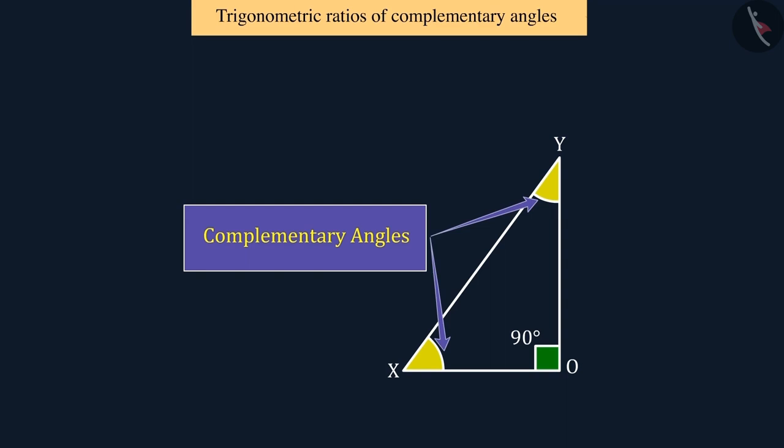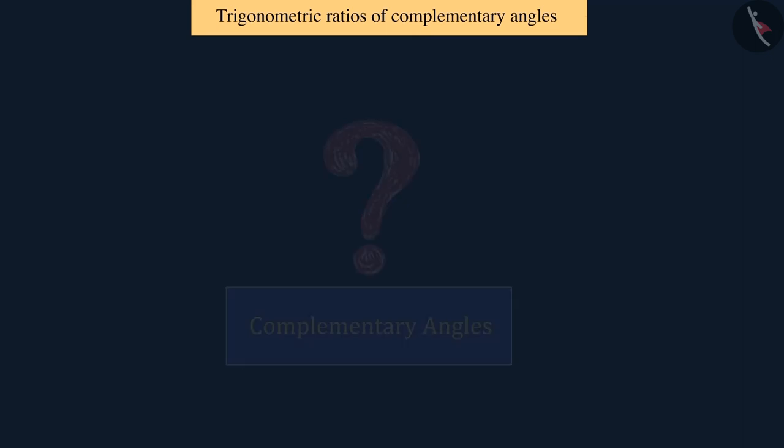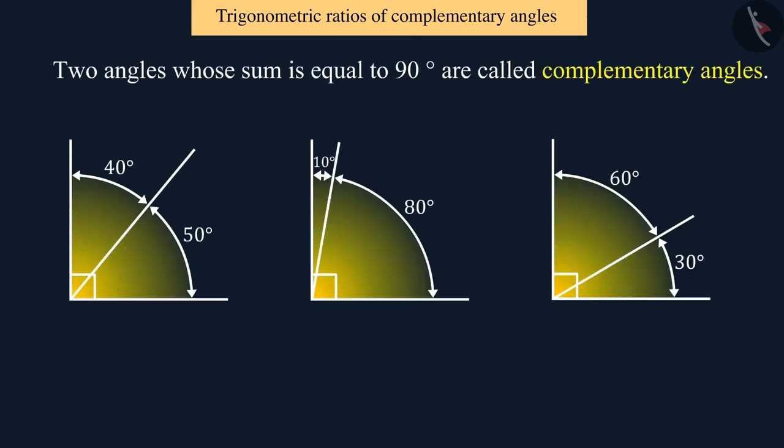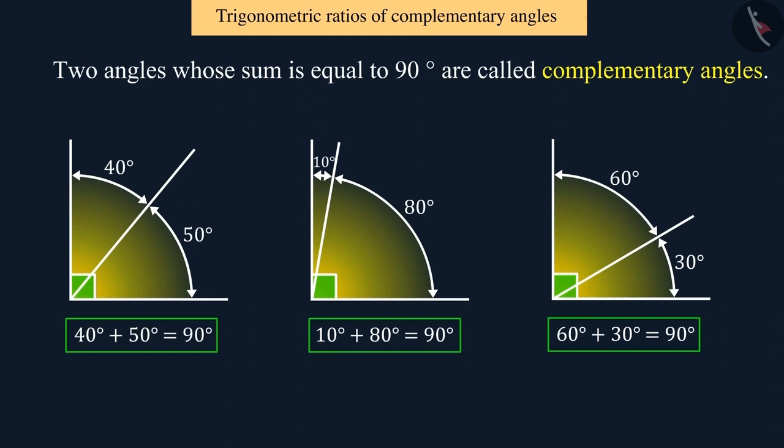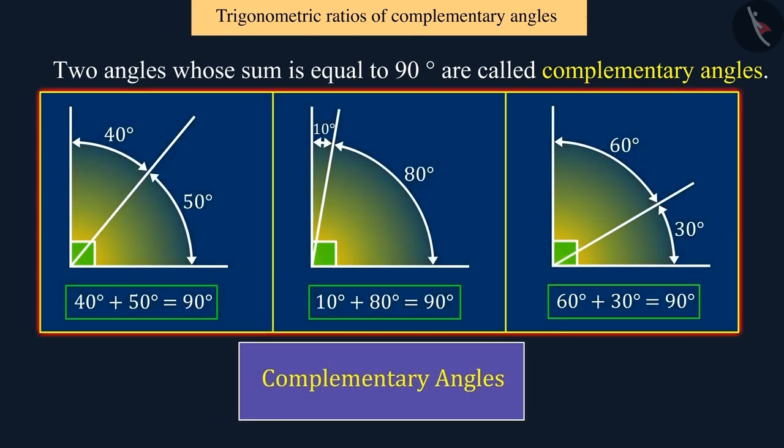Let's have a general discussion. Can you tell what is the meaning of complementary angles? Perfect. Any two angles whose sum is equal to 90 degrees are called complementary angles, which we can understand with these examples.